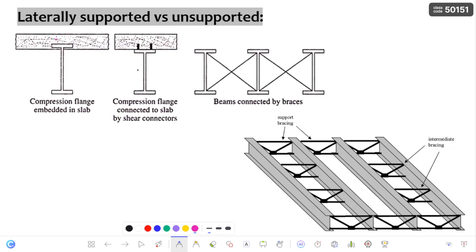To explain this concept in simple terms, if you observe this arrangement, this is the length direction, which is the longitudinal direction, and this is the width direction, which is called the lateral direction. There are four beams here. Whatever measurement you take with respect to the length direction is the longitudinal direction, and opposite to that is the lateral direction. Whenever the beam is supported with respect to this lateral direction, it is called a laterally supported beam.